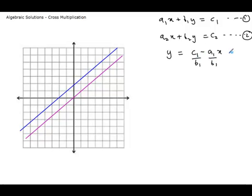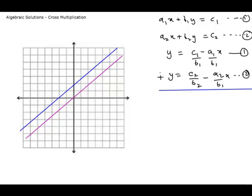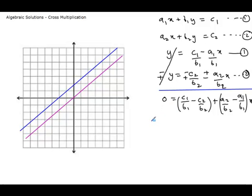Now equations 1 and 2 can be subtracted so that you get the value of x. If you subtract, the y terms cancel out, and on simplification you get 0 is equal to c1 over b1 minus c2 over b2, plus a2 over b2 minus a1 over b1 times x. This on further simplification gives you the value of x, which after rearranging becomes x is equal to (c1·b2 minus c2·b1) over (a1·b2 minus a2·b1).